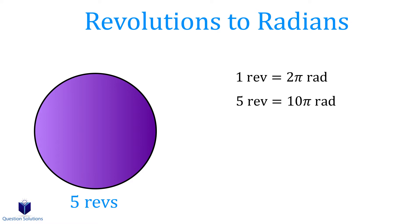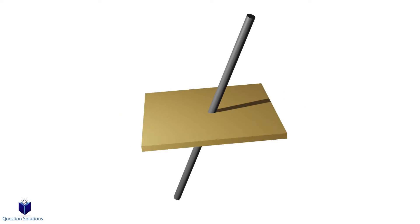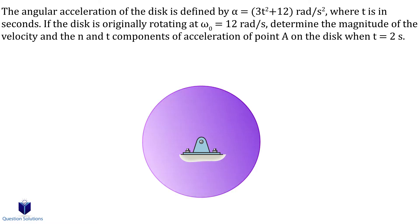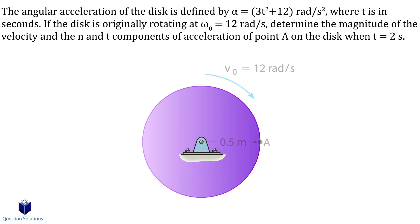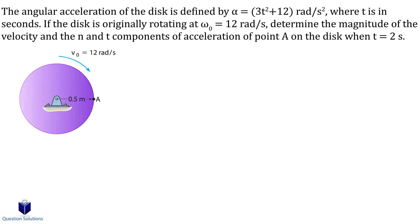Now that we got all of that out of the way, let's start off with some examples. In the very last example, we will cover cartesian vector form as well. In this first example, we need to find the magnitude of velocity and the normal and tangential components of acceleration at point A. First, we will find the magnitude of velocity — to do that, we need to figure out the angular velocity. In the question, we're given the angular acceleration with respect to time and the initial angular velocity.